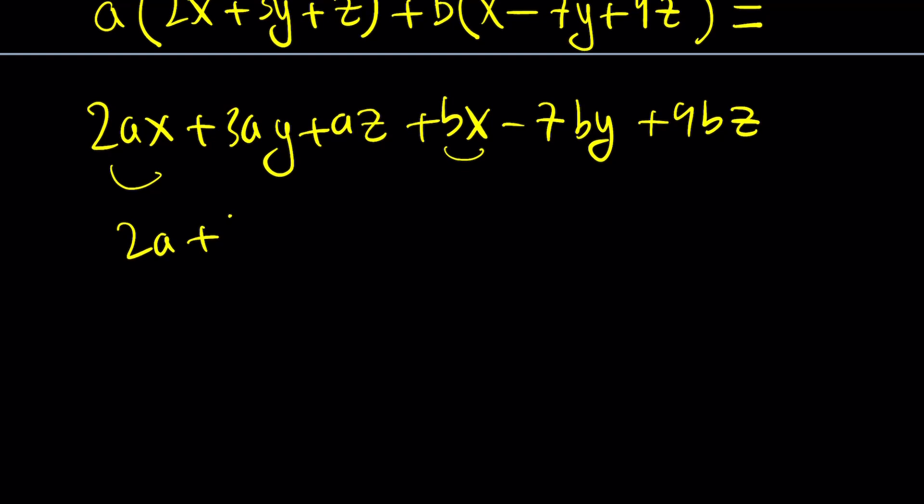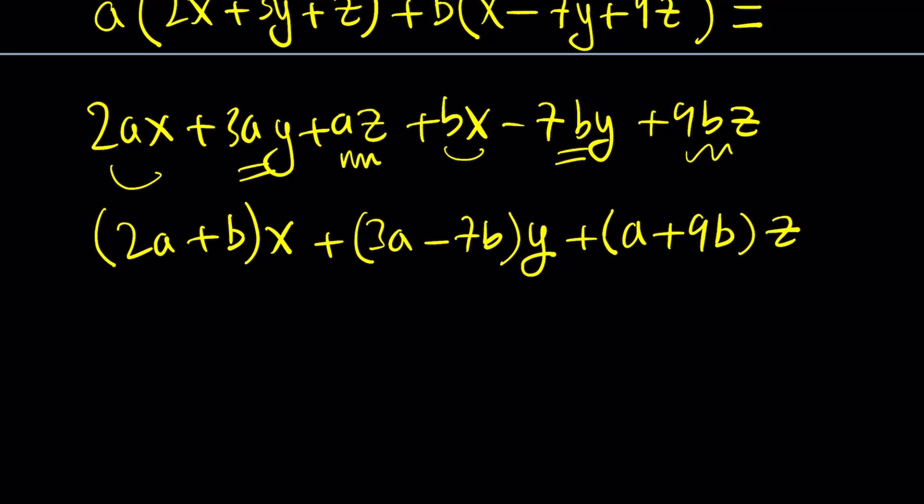2ax and bx like each other. So 2a plus b is going to be the coefficient of x. Now we have 3ay and minus 7by. So it's going to be 3a minus 7b. That's the coefficient of y. And finally, az and 9bz. a plus 9b is going to be the coefficient of z.